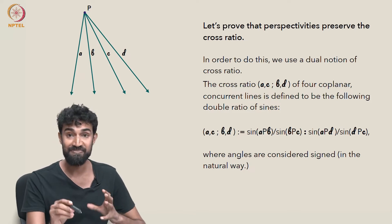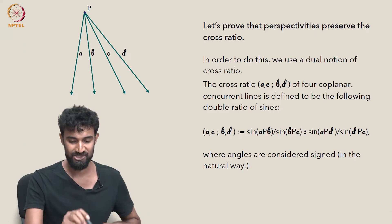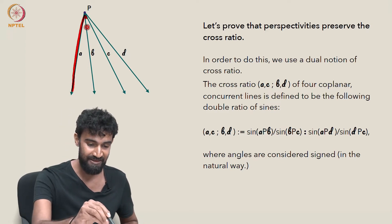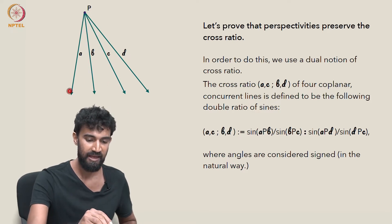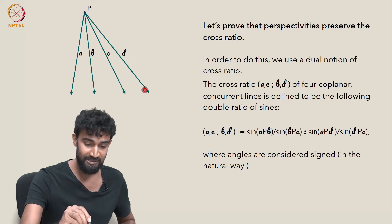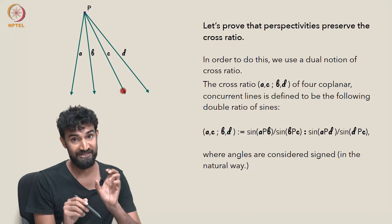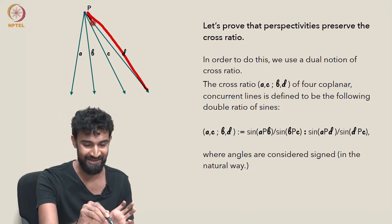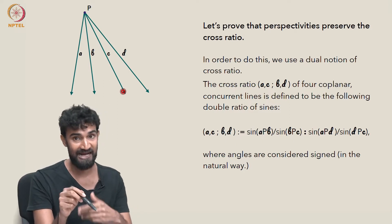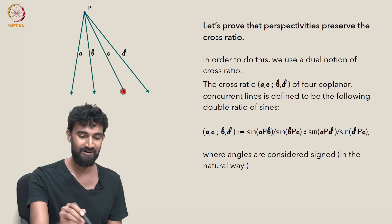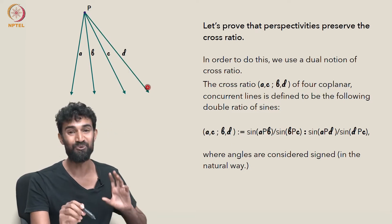This is going to be based on signed angles. We look at the angles APB, BPC, APD, and DPC — where the last angle is going to have a negative value because it's a signed angle. Just analogous to how we had signed lengths earlier, we're also going to have signed angles. This last one is negative because it's going in the wrong direction.